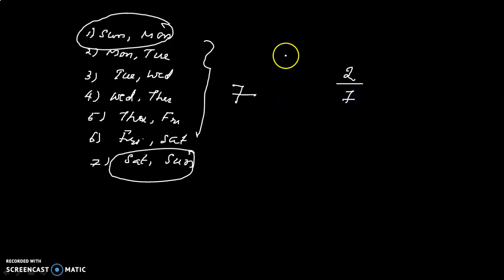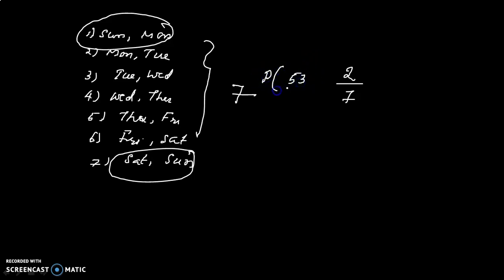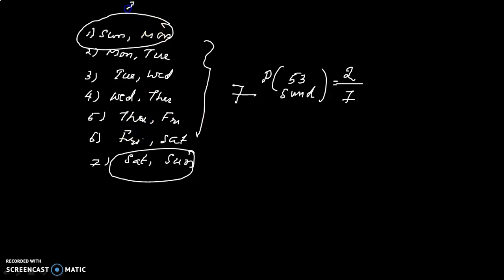Therefore, the probability that a leap year has 53 Sundays is equal to 2 by 7.